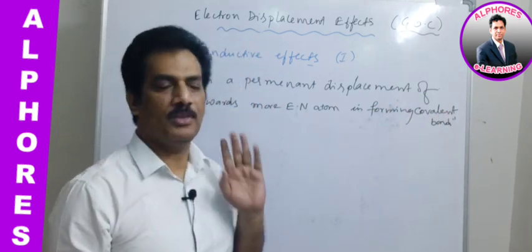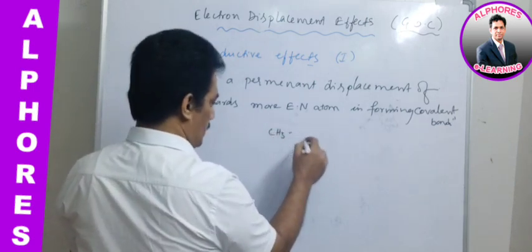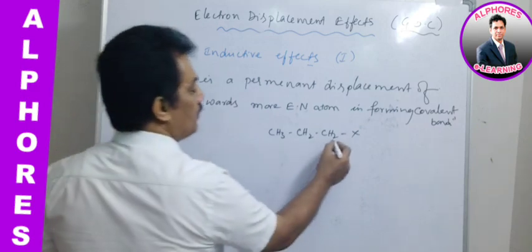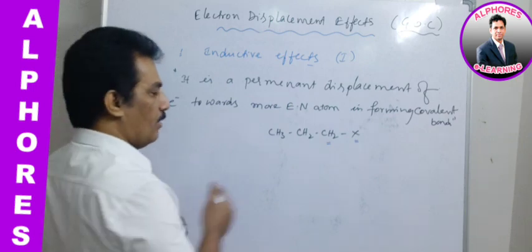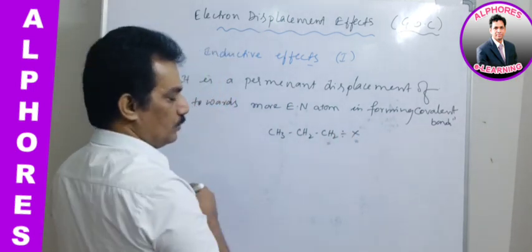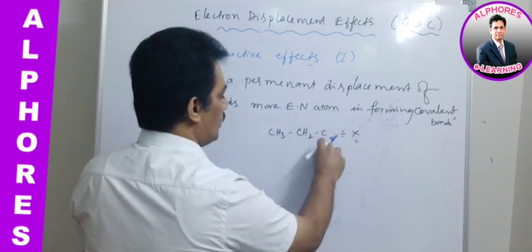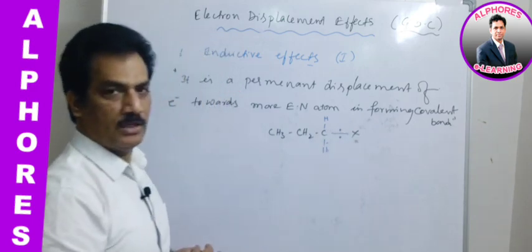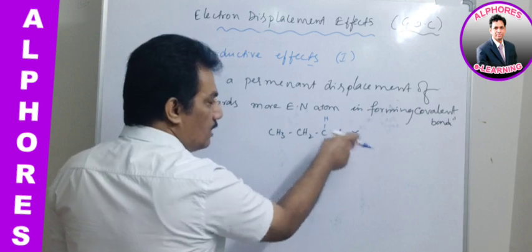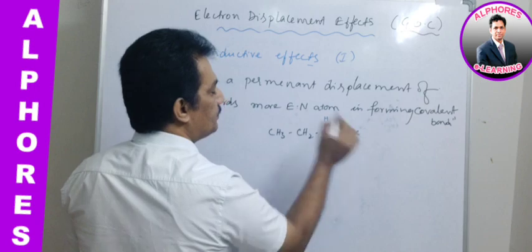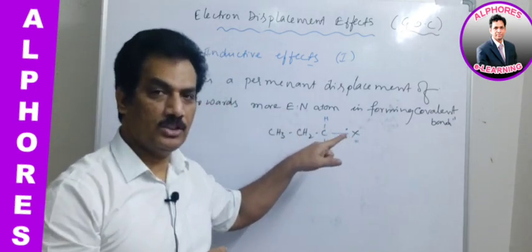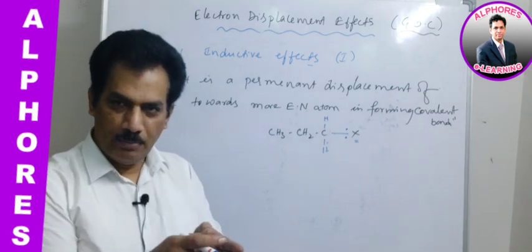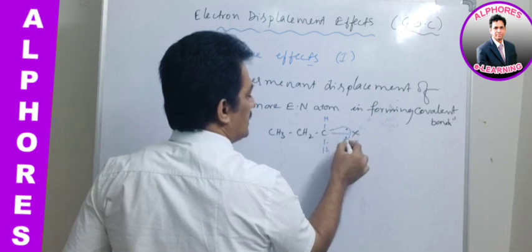For example, consider CH₃CH₂CH₂X. Between carbon and hydrogen there is an electronegativity difference. The electrons shared between carbon and hydrogen, instead of existing in equal sharing, are somewhat shifted towards the more electronegative atom. But the bond is still a covalent bond — just a permanent displacement towards it. The bond type does not change.